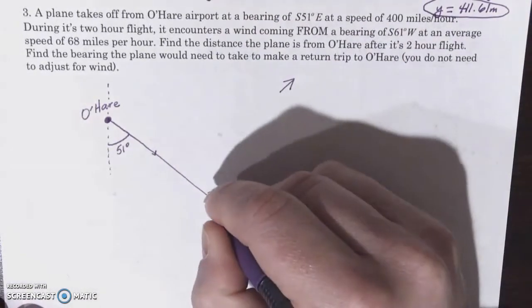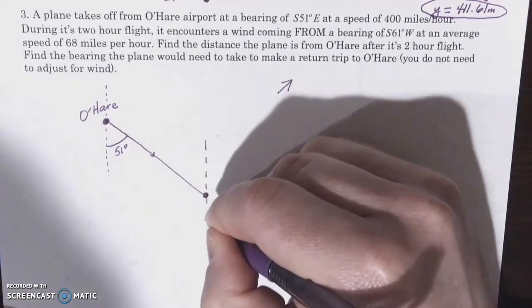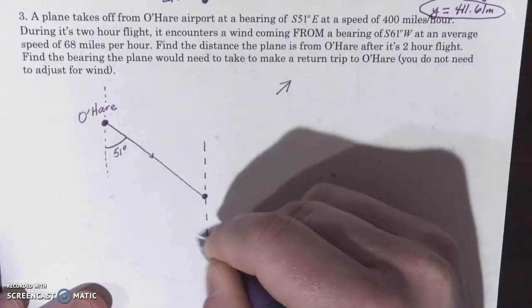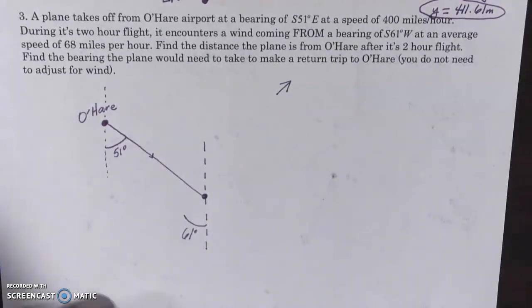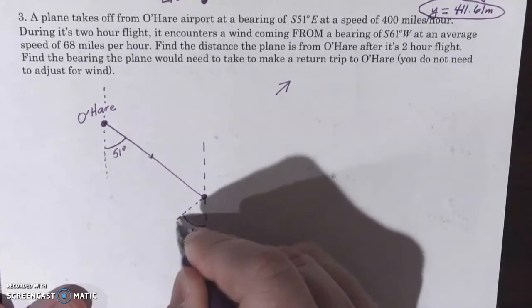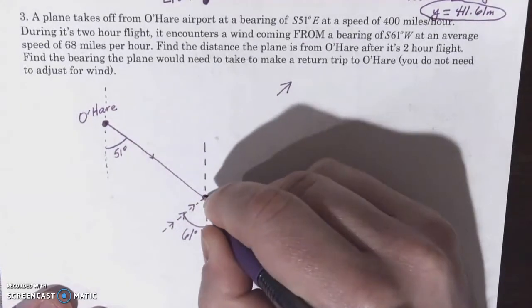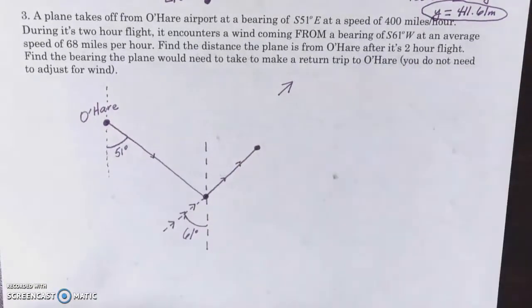And the way we do that is we basically create a triangle here. So here's how we deal with the wind. I know the plane never made it to this point, but we're going to use this point. Now, we're going to draw a north-south line of orientation. Very important. Wind, when measured, when you see wind on a weather report and they say it's a northeast wind or a southwest wind, that means it's coming from the southwest. So 61 degrees west of south. Here's south. Here's to the west. Let's open up 61 degrees. But I'm going to draw this as a dashed line because this is not the direction that it's pushing the plane. It's coming from 61 degrees west of south, which means it's going to actually push this plane this way. It's coming from that direction, so it pushes the plane that way.